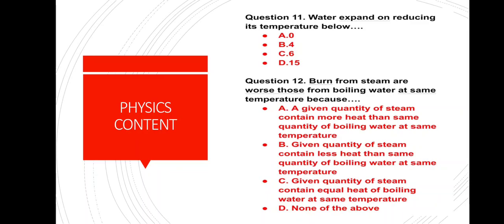Question number 12: Burns from steam are worse than those from boiling water at the same temperature. Options: A) A given quantity of steam contains more heat than the same quantity of boiling water at the same temperature. B) Contains less heat. C) Contains equal heat. D) None of the above. The correct answer is option A — steam contains more heat, that's why burns from steam are worse.